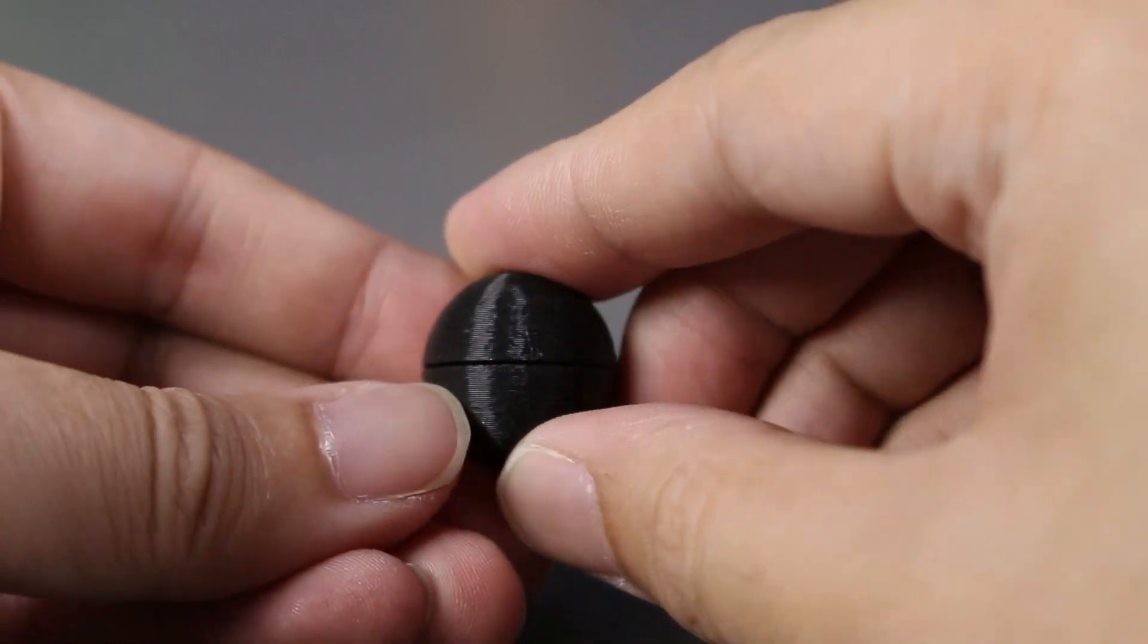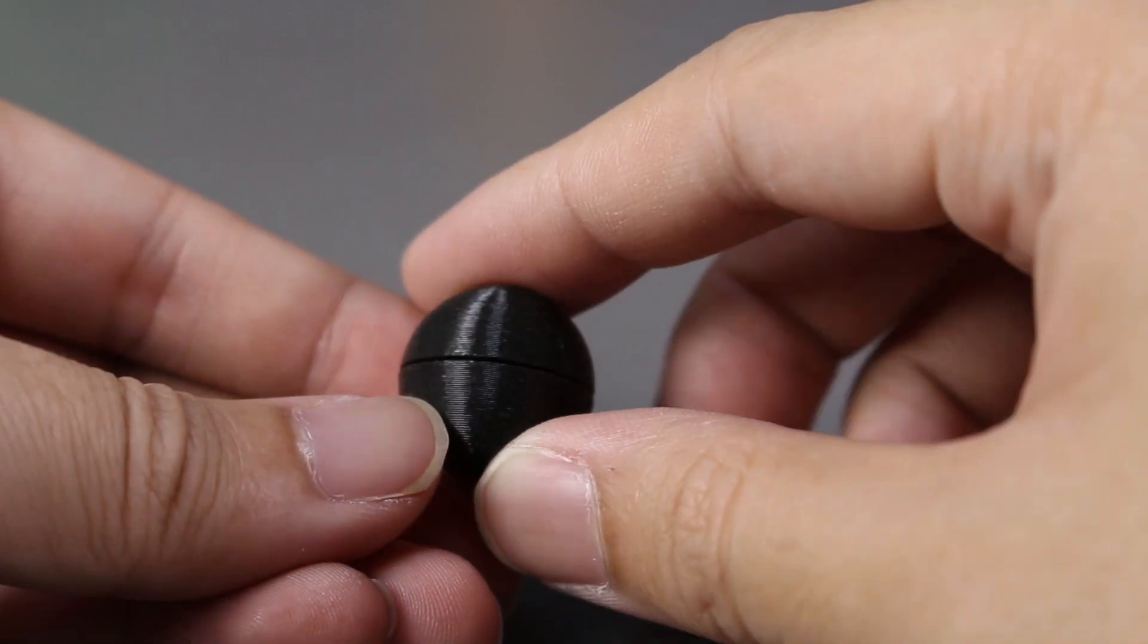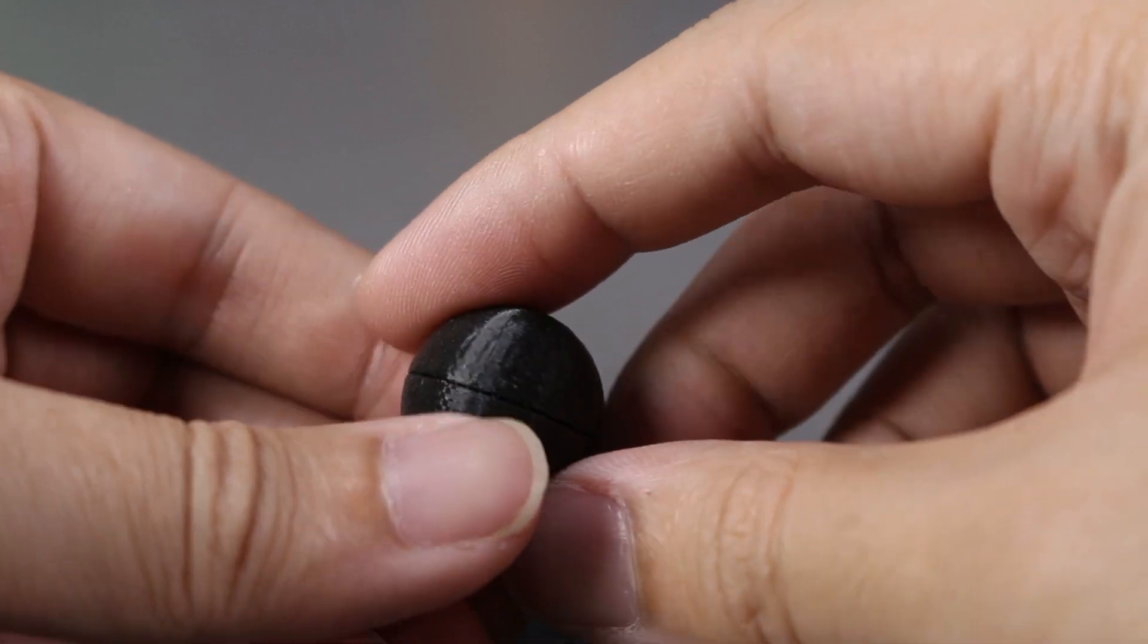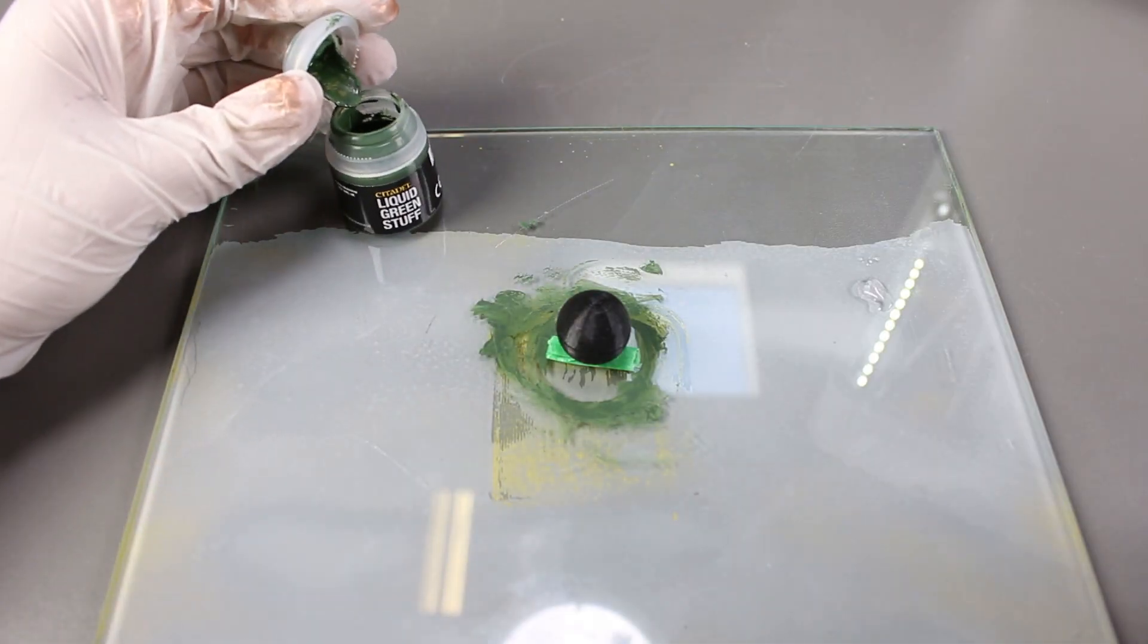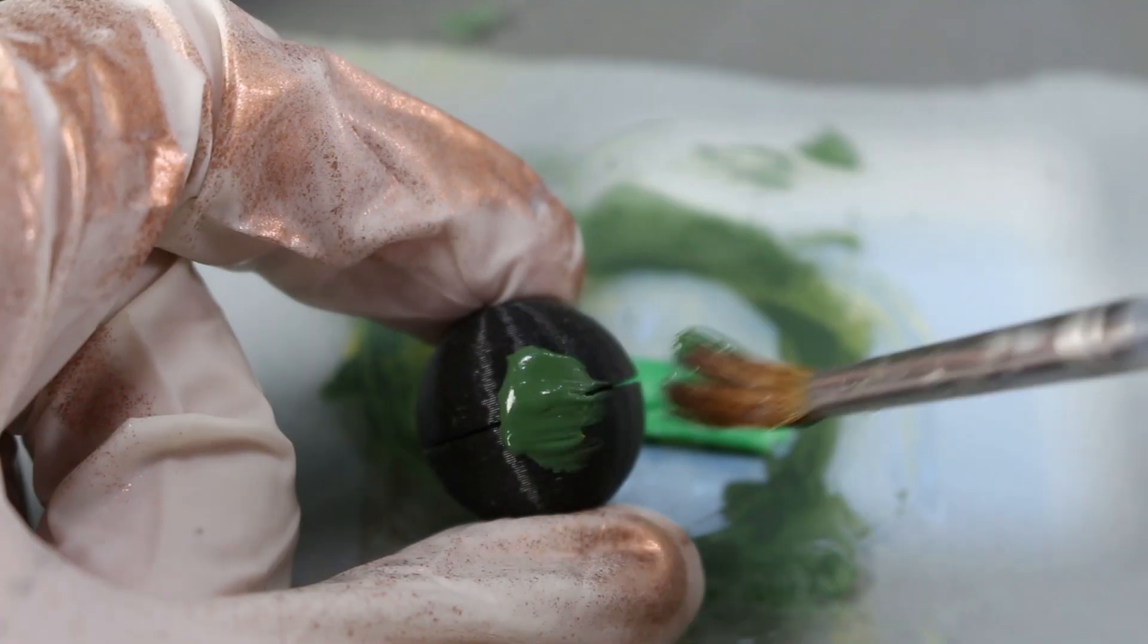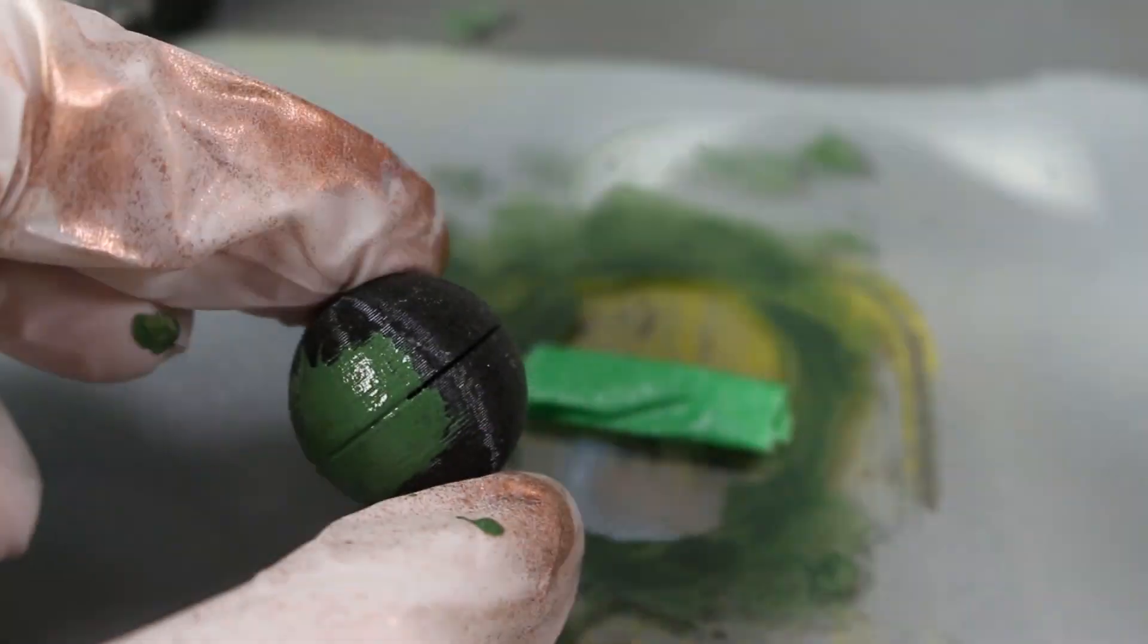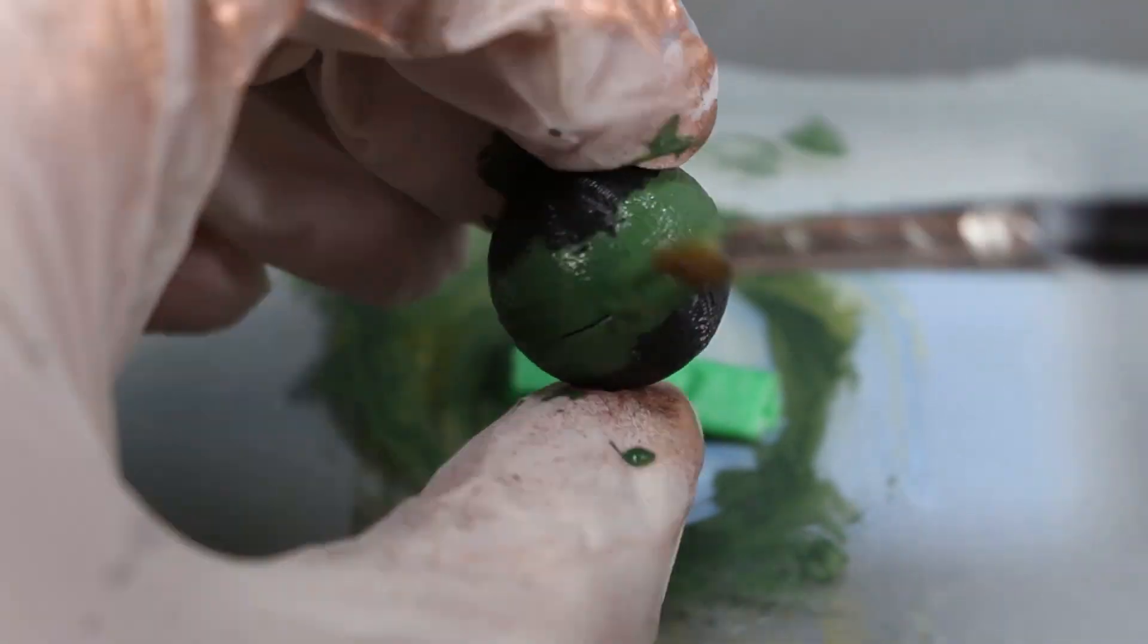We will be filling this gap in with liquid green stuff. Let's start applying the green stuff. I'll do a total of two coats on the ball, and then we will spray it down with a coat of acrylic paint to see the results.